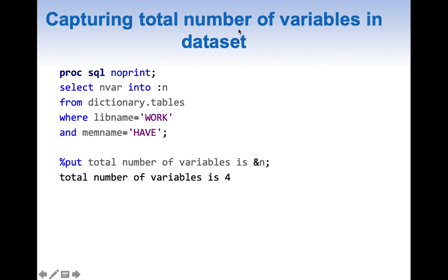We can capture the total number of variables in a data set by writing SELECT nvar INTO a macro variable from dictionary.tables WHERE libname equal to 'work' and memname equal to 'have'. We are capturing the number of variables of this particular data set into a macro variable. Using %PUT, which writes text and the macro variable value into the log, we can see the total number of variables captured is 4.